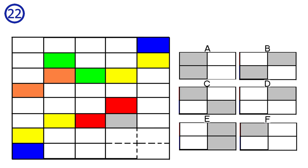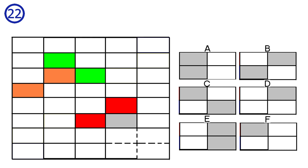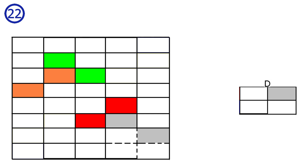Puzzle 22. Here we have two different objects: one object in the top right and bottom left, and another in the top left and bottom right. They have different colors but their shape is the same. To make the bottom right shape complete, we have to color this tile, matching answer D. Answer D is correct.